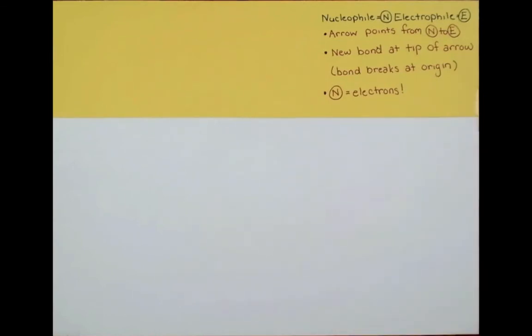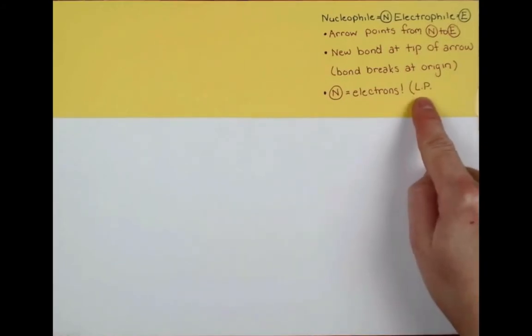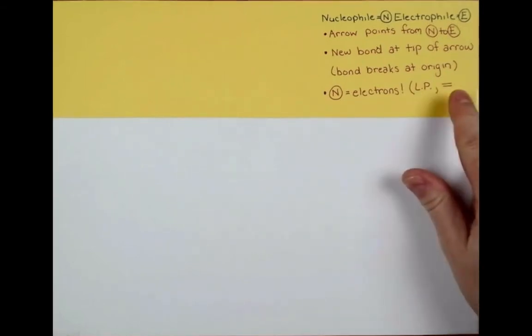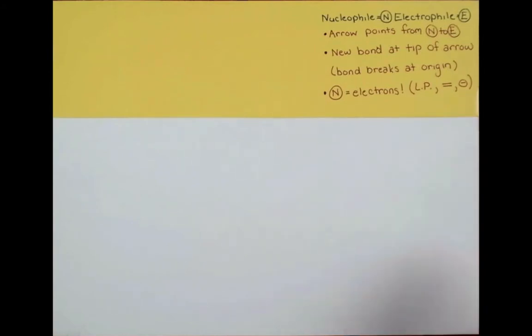So what are some things that can have extra electrons? Lone pairs on something like oxygen or nitrogen can make new bonds and act as nucleophiles. Double bonds and triple bonds can act as nucleophiles. And sometimes our extra electrons are represented with a negative charge and you could show that negative charge actually attacking and your arrow will point from that.